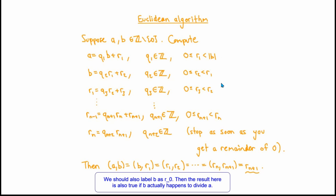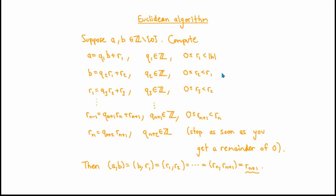Now when I introduced the Euclidean algorithm, I said it's a fast algorithm. And if you're a person who's thinking about computational complexity, you may wonder how this can be fast, since a priori the remainders could decrease very slowly. Even though a remainder may decrease slowly from one step to the next, the remainders are guaranteed to decrease by at least a factor of two every two steps. That's something which is not difficult to show, and it guarantees that the Euclidean algorithm is a fast polynomial time algorithm for computing the GCD of a and b.